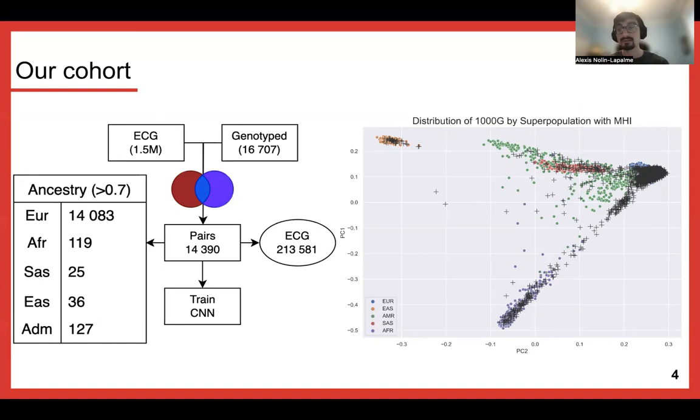After the merge, we had 14,000 patients with diverse distribution of ancestry. Quality control on the ancestry distribution was required, yielding roughly a quarter of a million ECGs, and then making sure there would be no leakage with stratified splitting, we trained a convolutional network on that data. On the right, we see the distribution of our patients projected on the 1,000 Genomes dataset. We see that when we project the data in black, we have some East Asians, some Africans, we have some Americans and South Asians here in green and red, and a lot of Europeans.